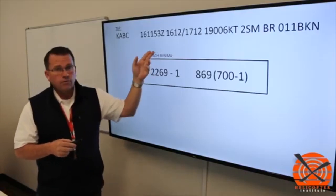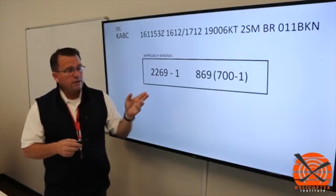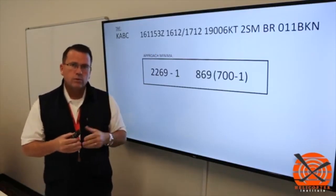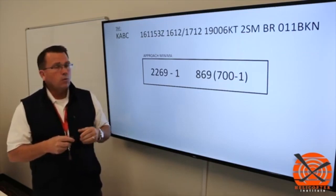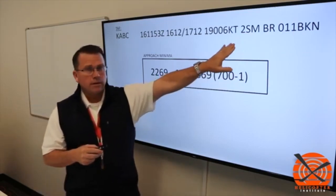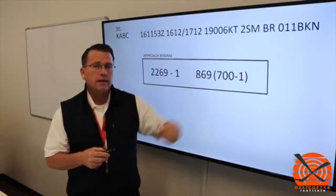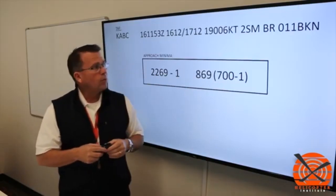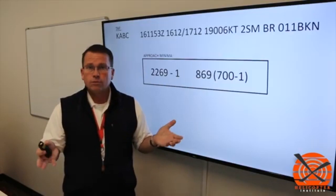We have, of course, the time frame on the TAF, the winds, and then as it relates to the rule, 91.167 and 91.169, we now have a visibility requirement and we have a ceiling requirement. And in this particular case, we have two statute miles of mist and an 1,100 foot broken ceiling.